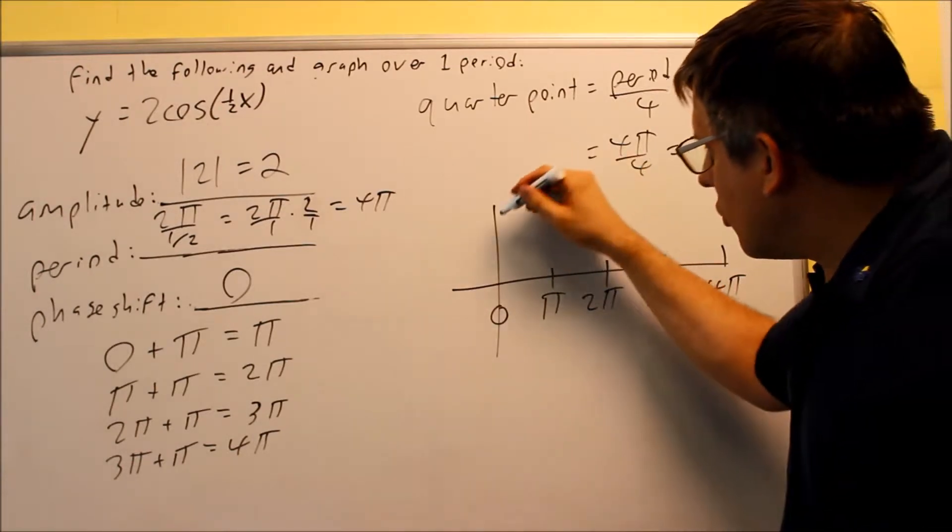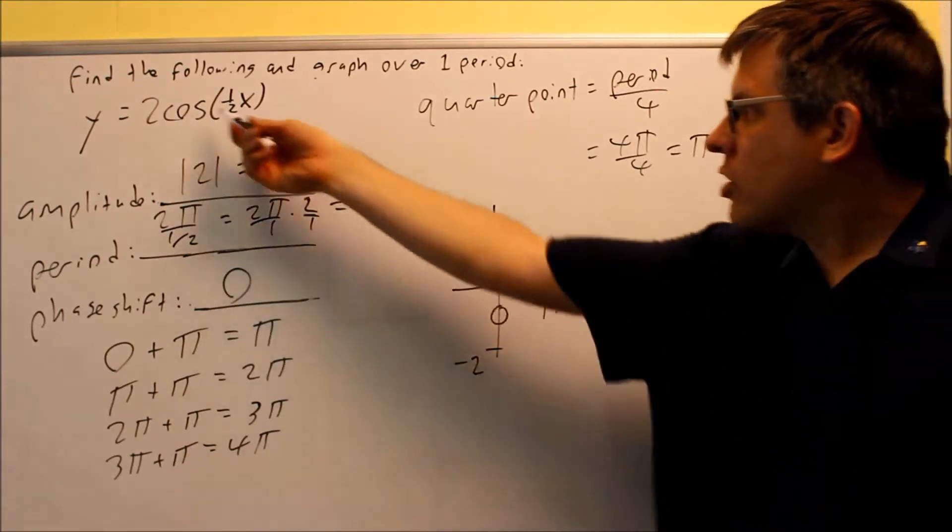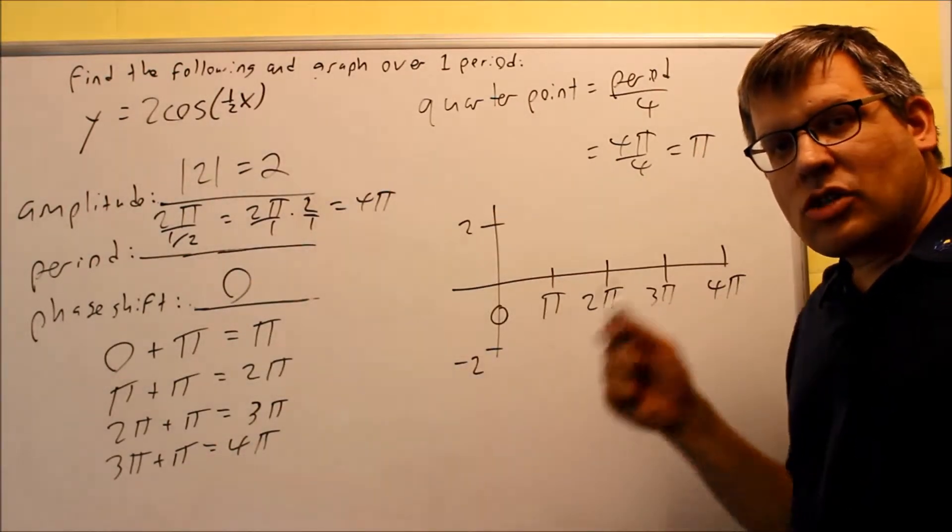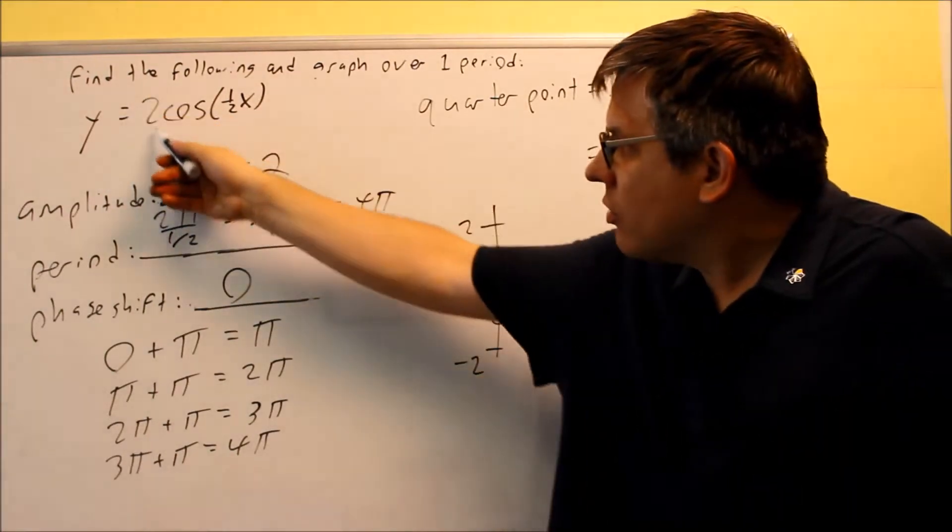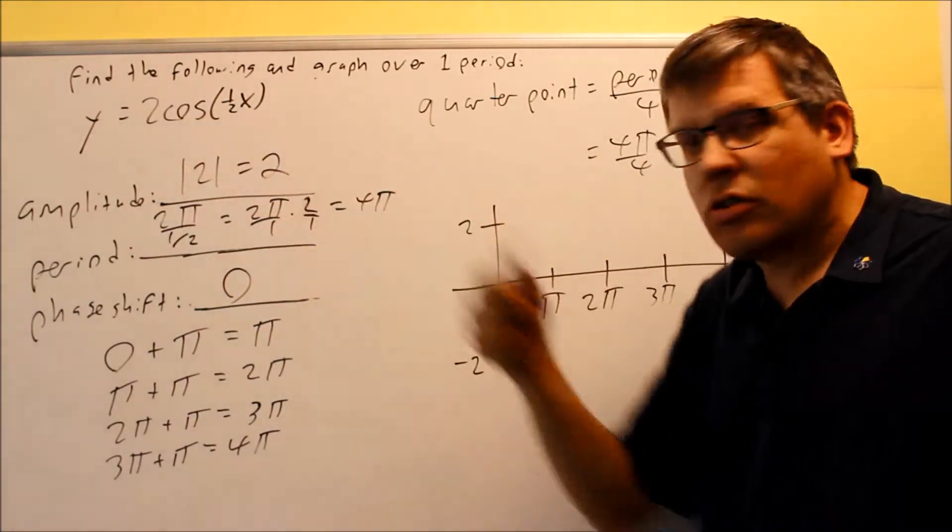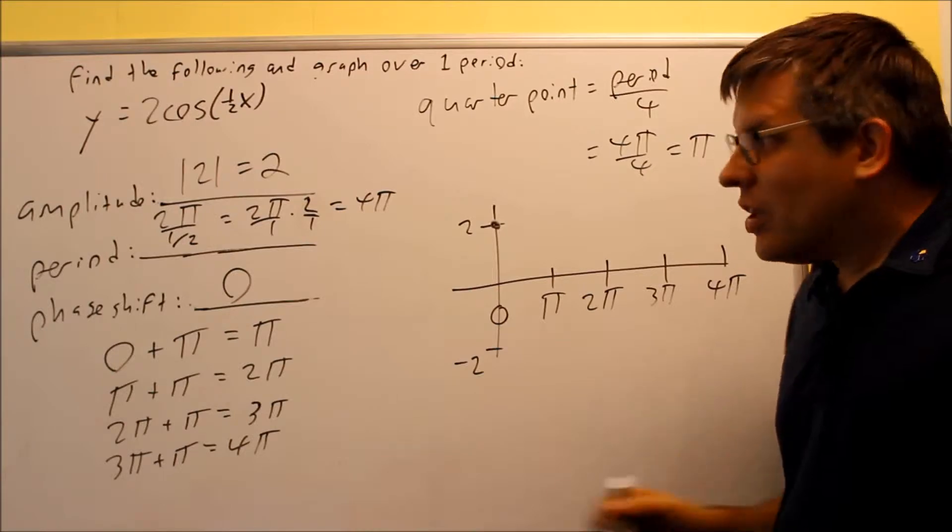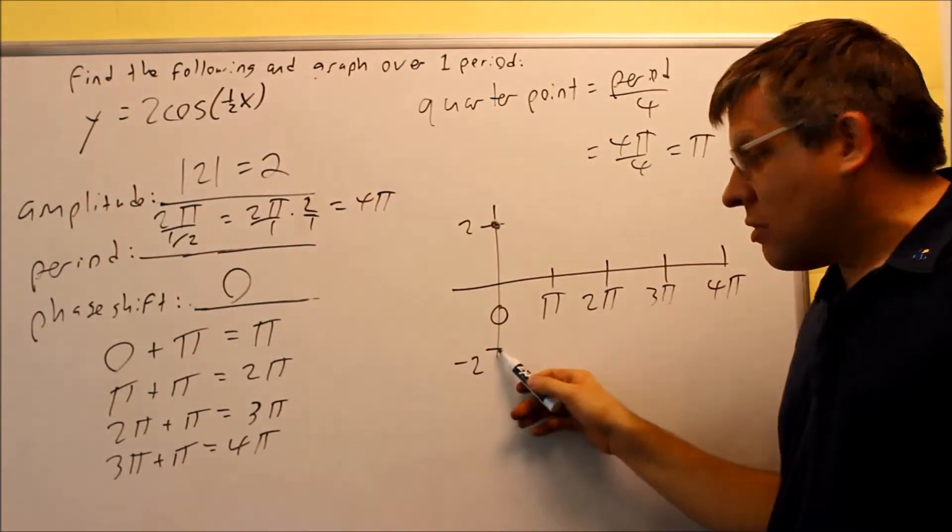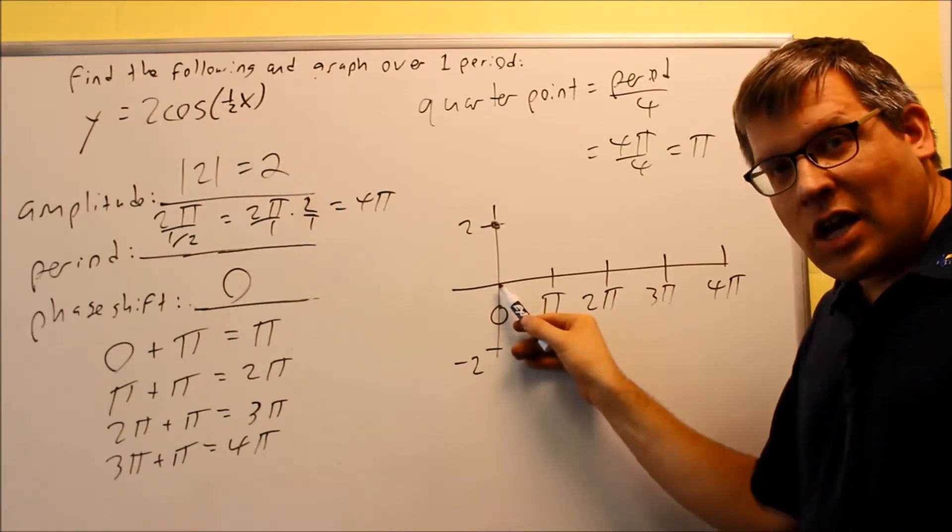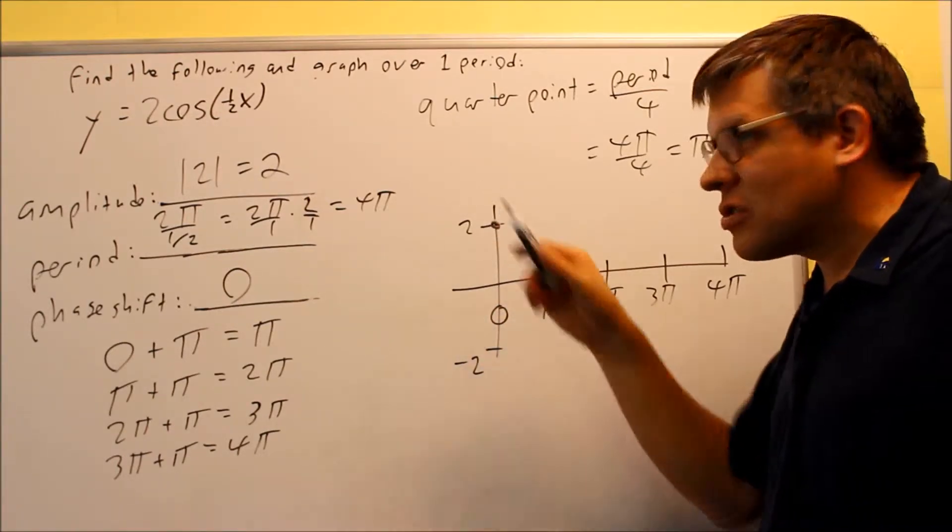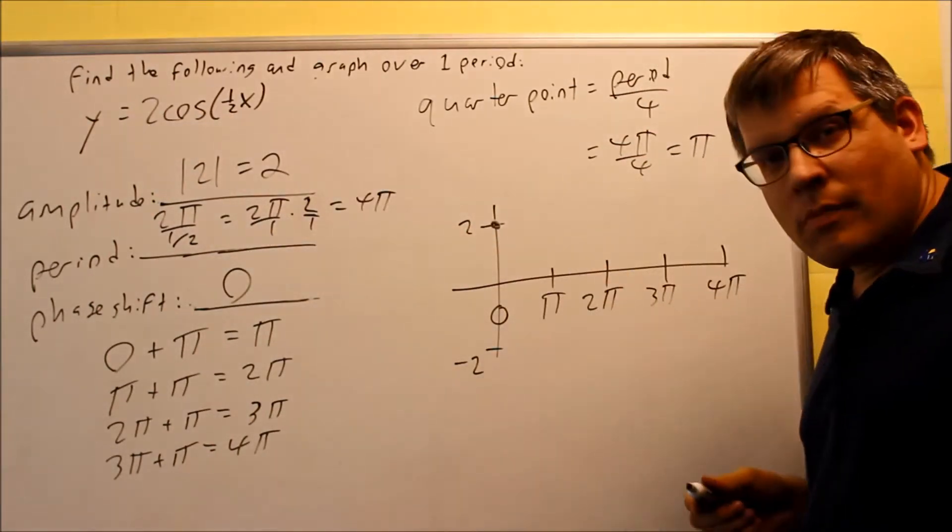The amplitude is 2, which means the graph is going to go up to 2, and go down to negative 2. We originally have a cosine graph. If you have a cosine, then you start the graph at the number that you have in front of the trig function. In this case, I have a 2 in front of the cosine, so my graph needs to start up here at 2. If that was a negative 2, I'd be starting it down here. If this was a sine graph, I'd be starting it right there on the x-axis. But cosine always has to start on the amplitude itself, so that's a positive 2, we start there.